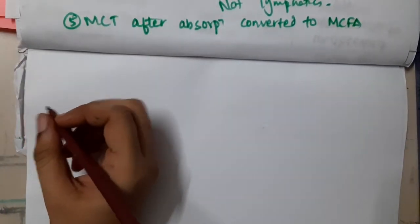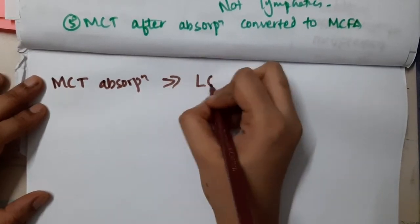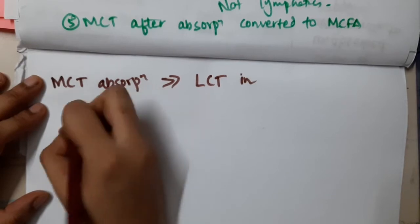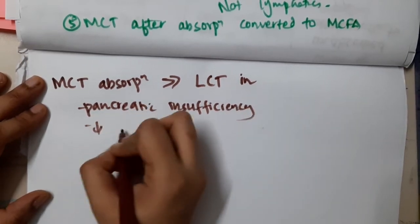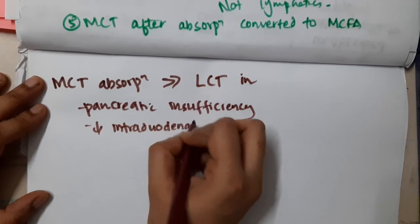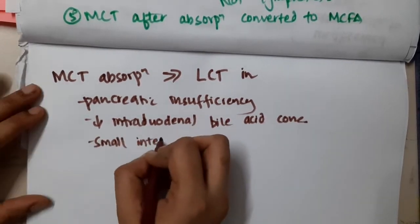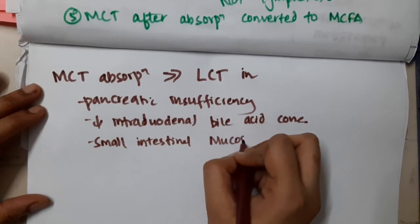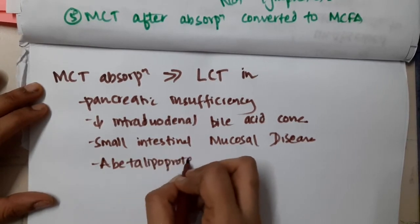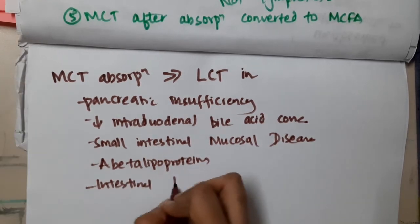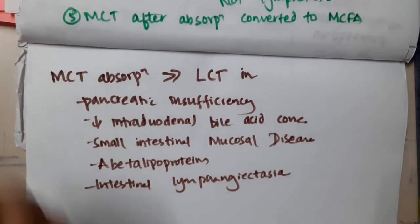According to Harrison, medium chain triglyceride absorption is greater than long chain triglyceride absorption in the following conditions: pancreatic insufficiency, reduced intraduodenal bile acid concentrations, small intestinal mucosal disease, abetalipoproteinemia, and intestinal lymphangiectasia.